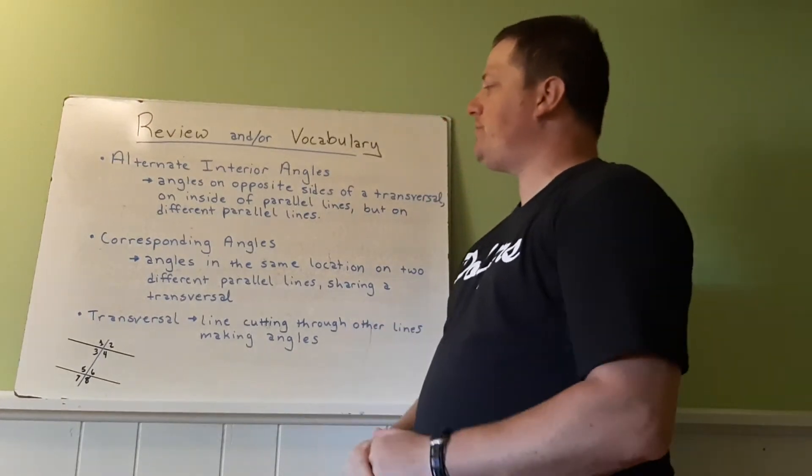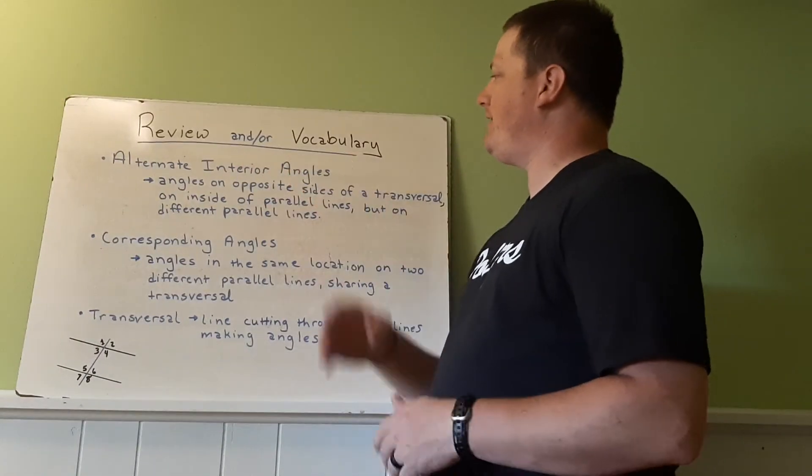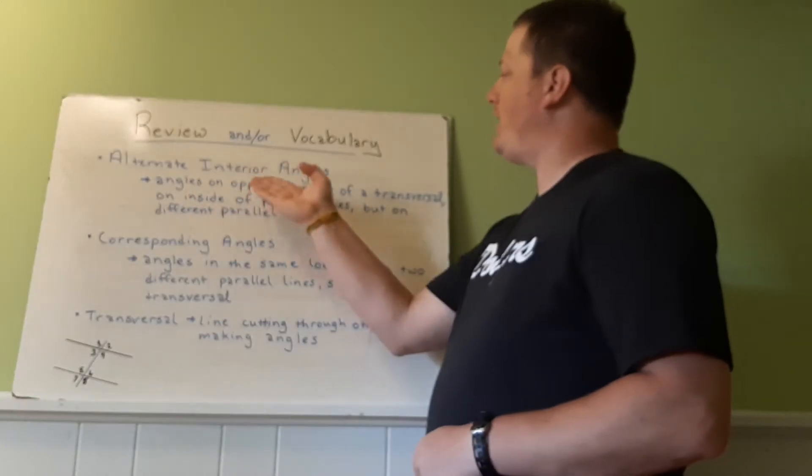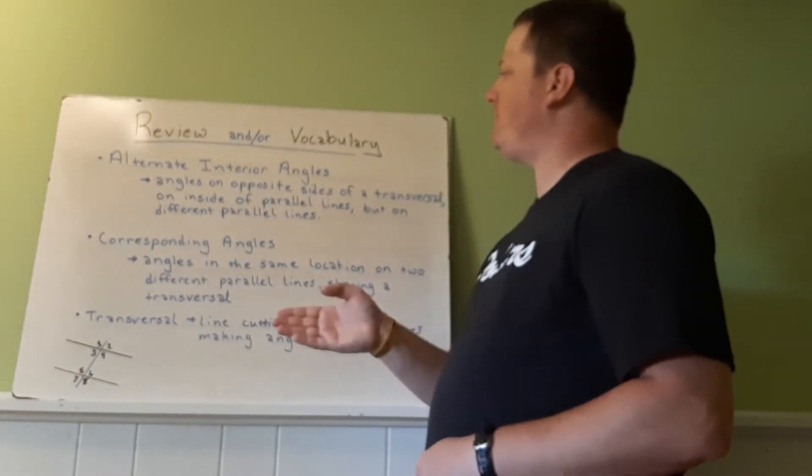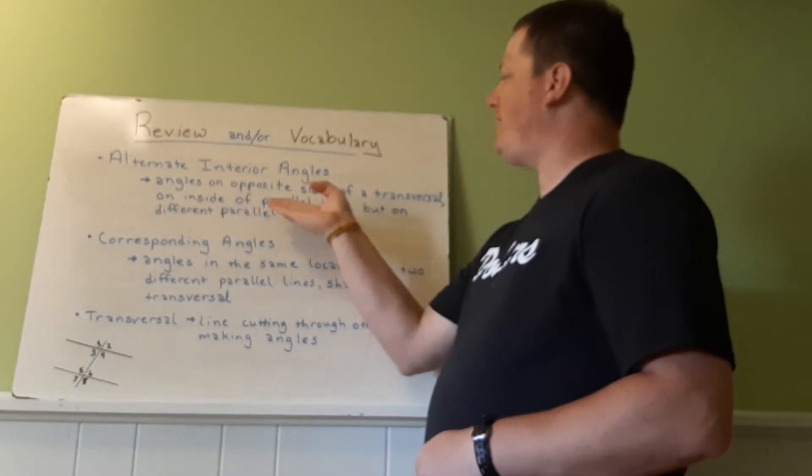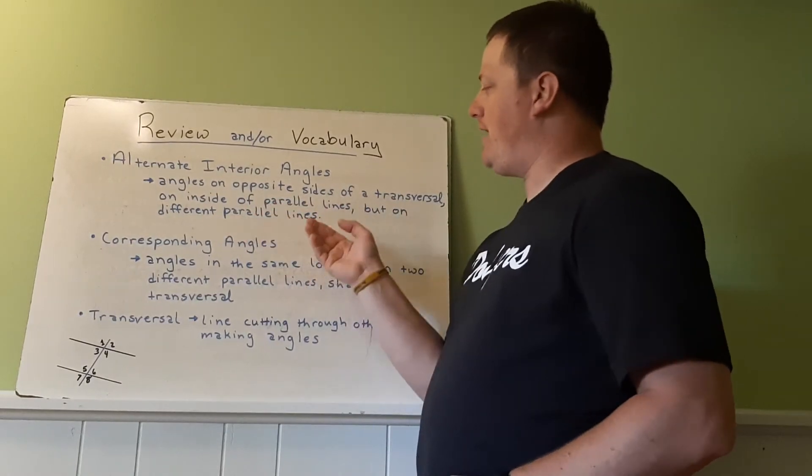So first we need to learn what these words are. Alternate interior angles are angles on opposite sides of a transversal, on inside of parallel lines, but on different parallel lines.